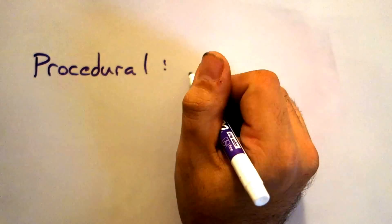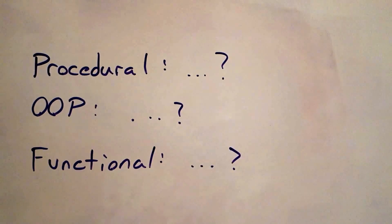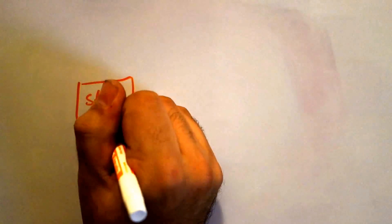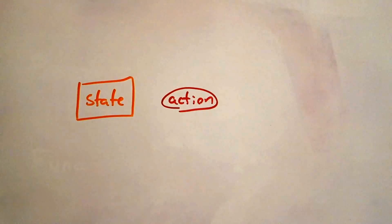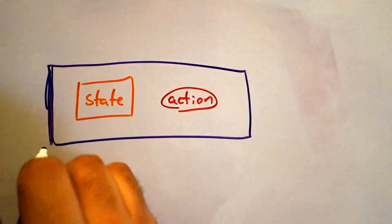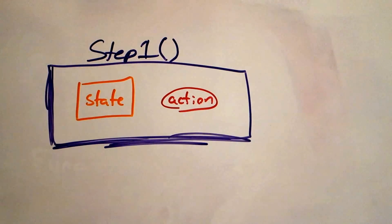Now if you notice, these definitions are very vague. So what would happen if we made some code that encapsulates state, but also modifies that state step by step? What paradigm would this code fall under?